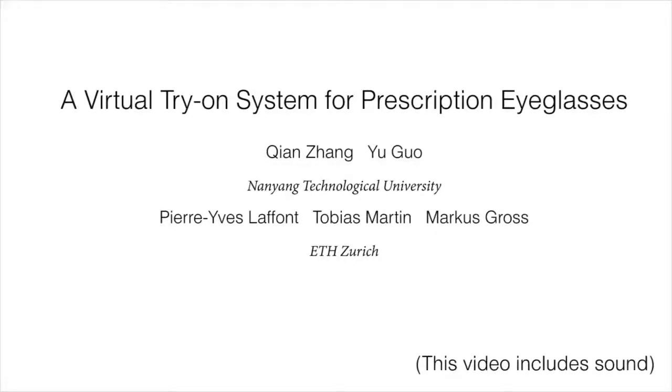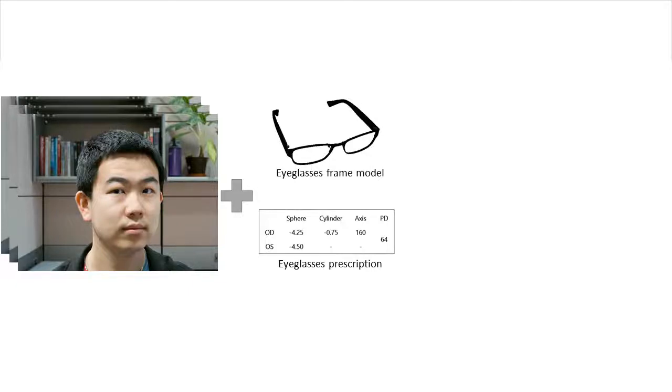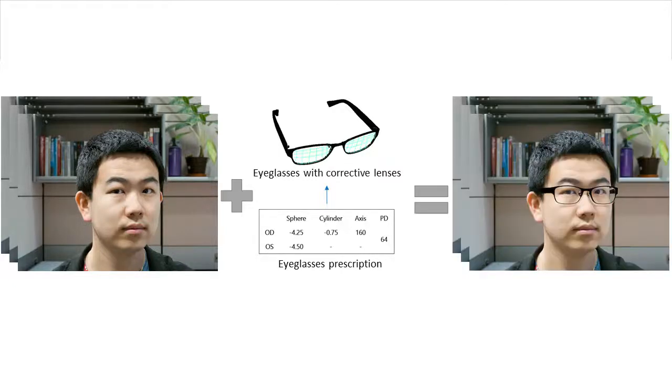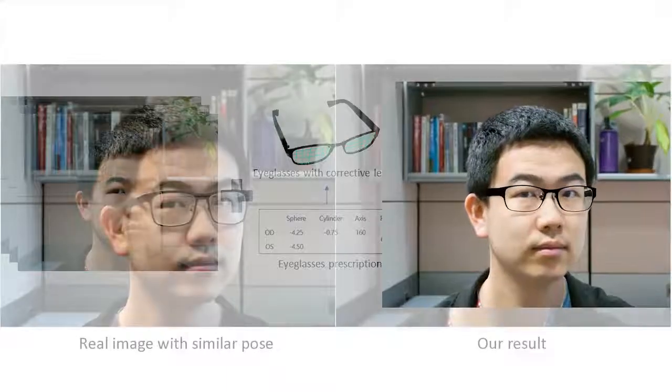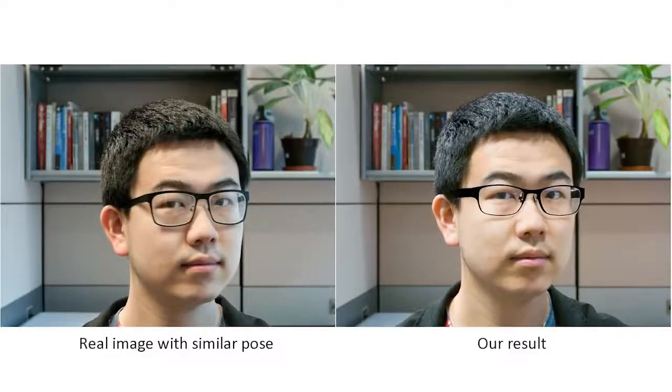A virtual try-on system for prescription eyeglasses. We propose a prescription eyeglasses try-on system which can build corrective lens models based on the user's prescription and generate synthesized video, allowing a user to virtually try on a variety of prescription eyeglasses. Our realistic simulation of refraction effects increases the perceived realism according to the user study.